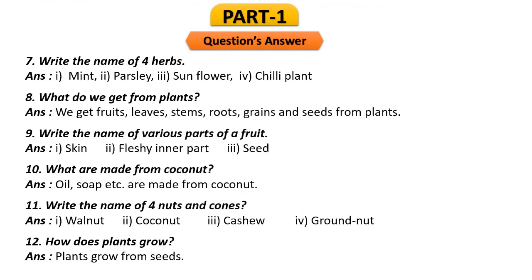Question 7: Write the names of four herbs. They are: mint, parsley, sunflower, and chili plant. Question 8: What do you get from plants? We get fruits, leaves, stems, roots, grains, and seeds from plants. These are all the useful things we obtain from plants.